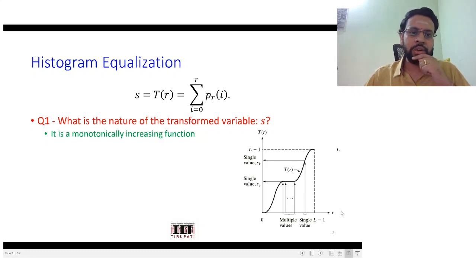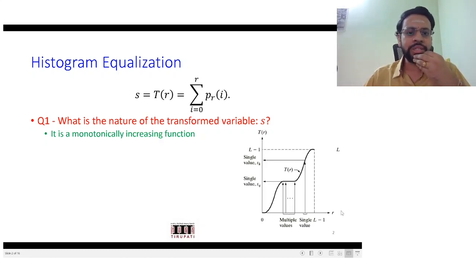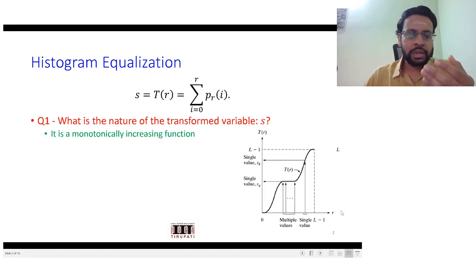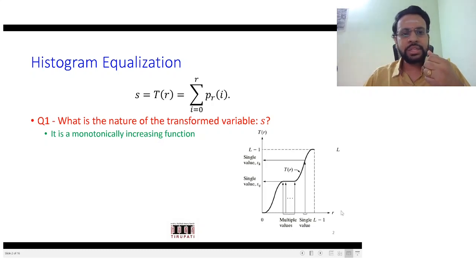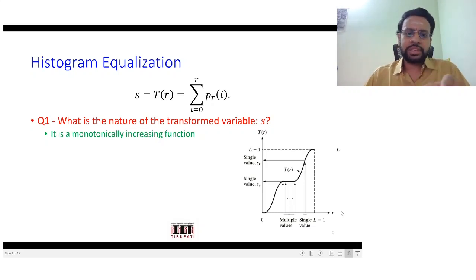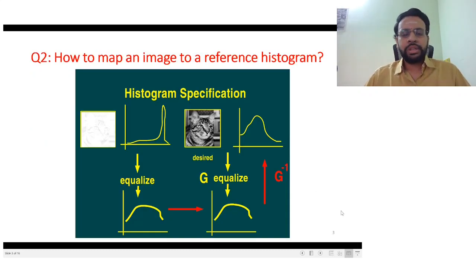In that zoom session we also discussed that although there is no ideal solution for it, there are some strategies that are commonly followed in order to deal with this non-unique inverse transform. The second question that has been posed is: let's say instead of an equalized histogram, our objective is to map the histogram of the current image to a reference histogram.